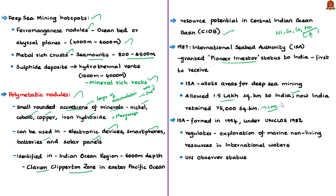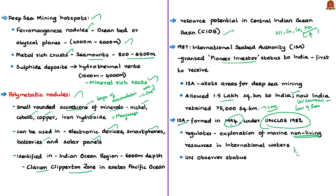The International Seabed Authority is an intergovernmental organization established under the 1982 UN Convention on the Law of the Sea (UNCLOS). It regulates the exploration and exploitation of marine non-living resources in international waters. It was formed in 1994 and is headquartered in Kingston, Jamaica.